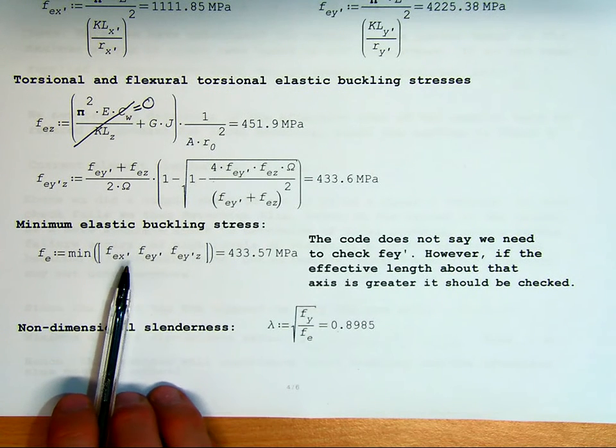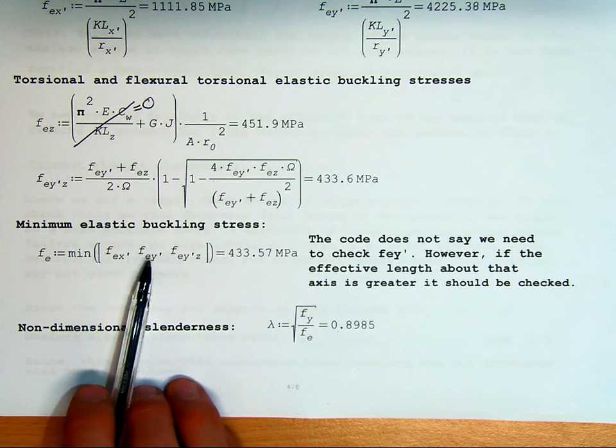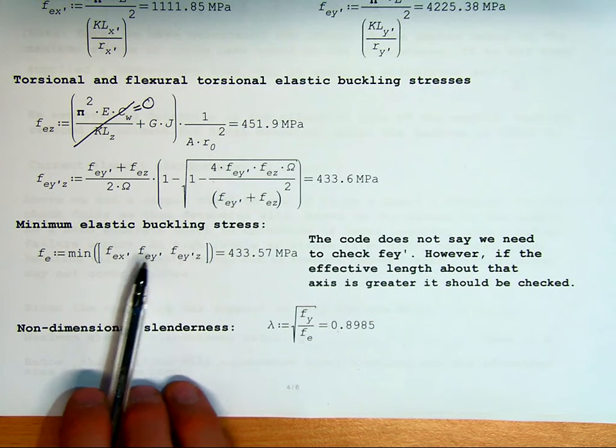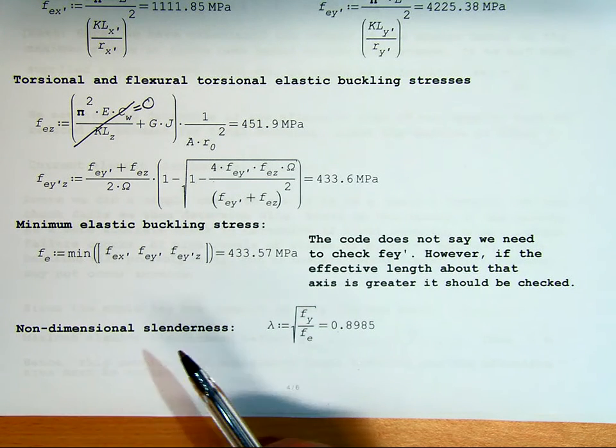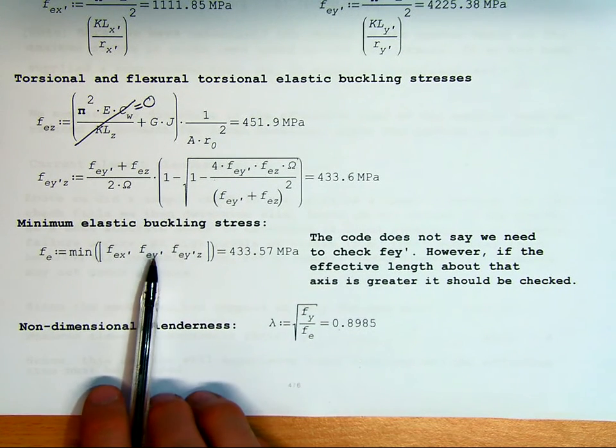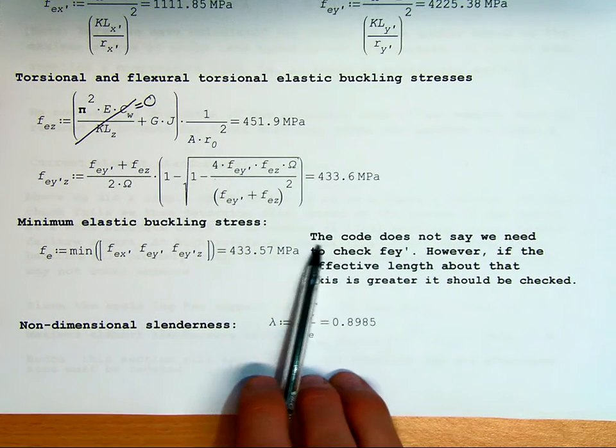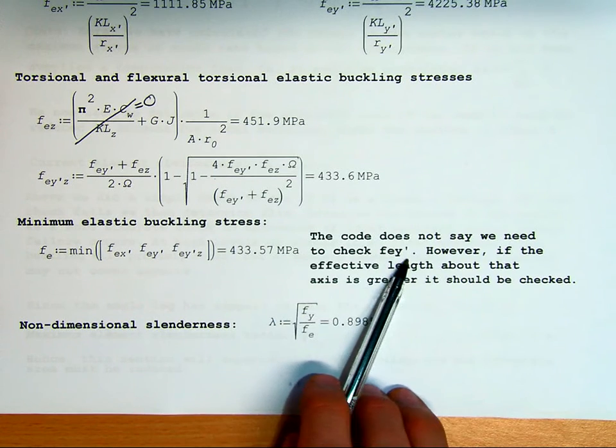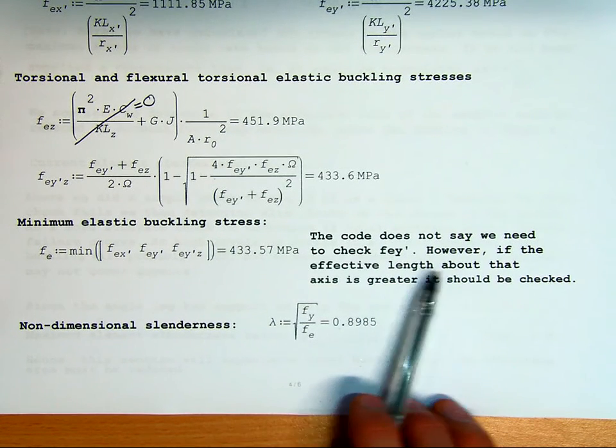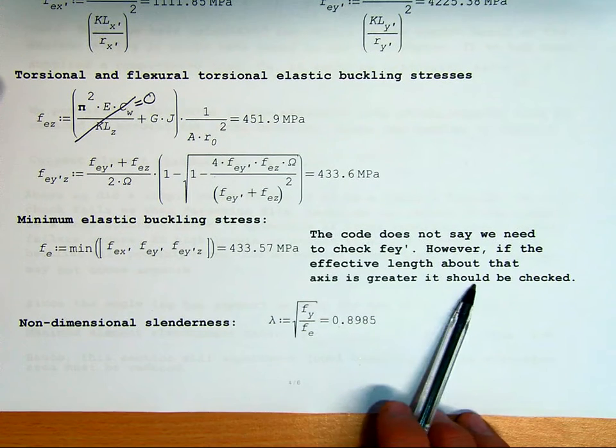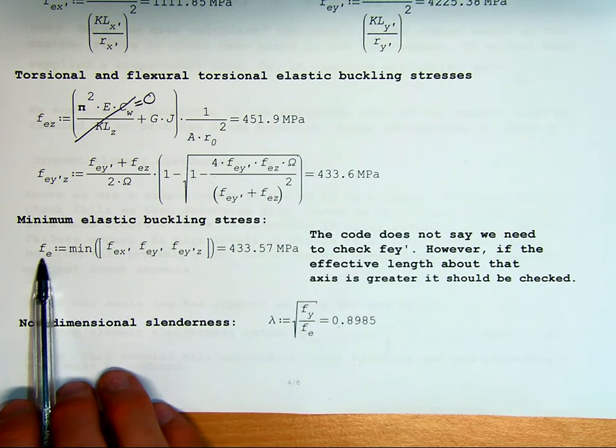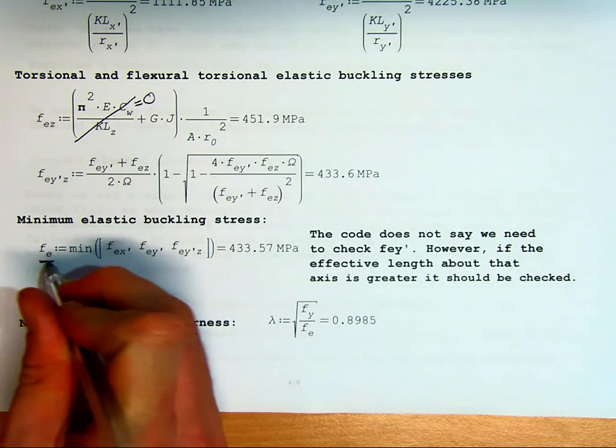Once we've found those, we get the minimum. You don't necessarily have to check the f_ey' value. I've put it in completeness here simply because if you have multiple effective lengths, potentially it may govern. So I've said our elastic stress is the minimum of X, Y, and Z. As I said, the code does not say we need to check f_ey'. However, if the effective length about that axis is greater, it should be checked.